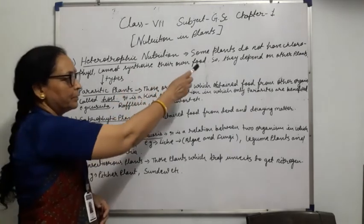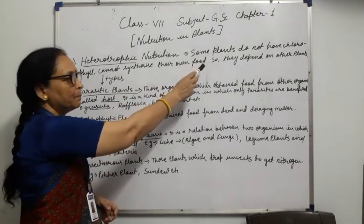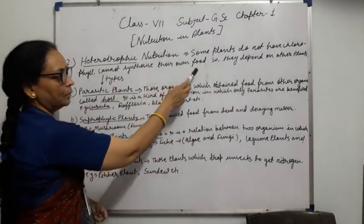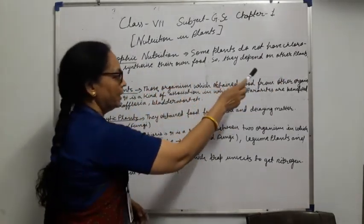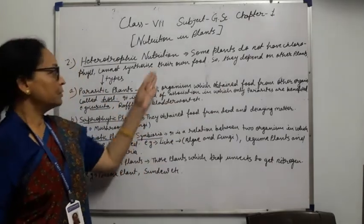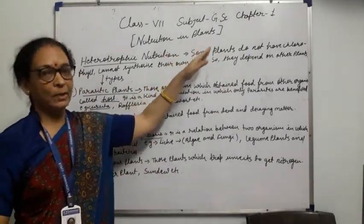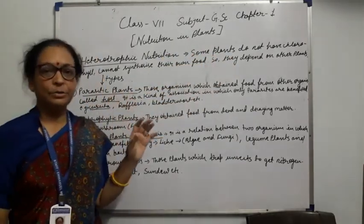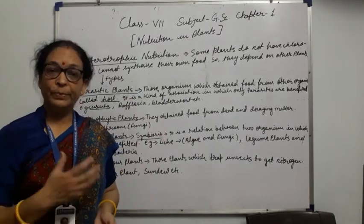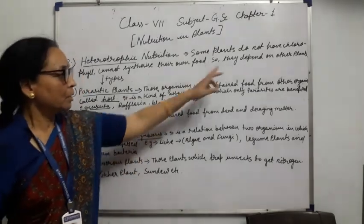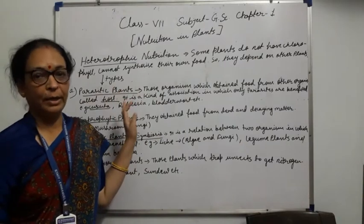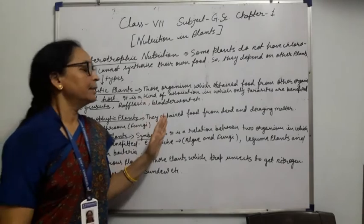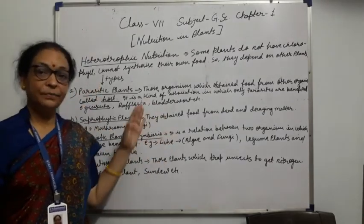The definition of heterotrophic nutrition: some plants do not have chlorophyll and cannot synthesize their own food, so they depend on other plants. Because of the absence of chlorophyll, they do not prepare food by the process of photosynthesis. In that condition, they are of different types.